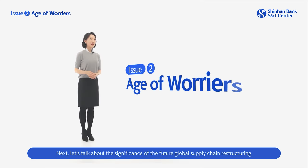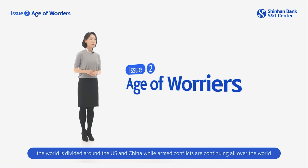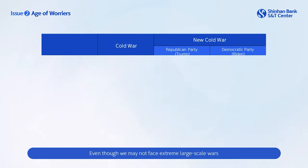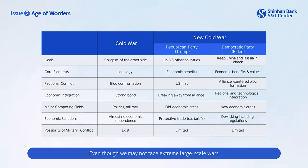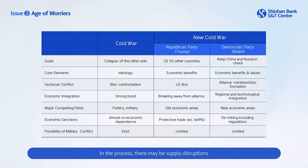Next, let's talk about the significance of future global supply chain restructuring from a foreign exchange market point of view. With several elections coming up, including the U.S. presidential election, the world is divided around the U.S. and China, while armed conflicts are continuing all over the world. Even though we may not face extreme large-scale wars, the global supply chain based on manufacturing will continue to be restructured due to the new Cold War over economic and technological hegemony. In the process, there may be supply disruptions, especially in raw materials and technology sectors.